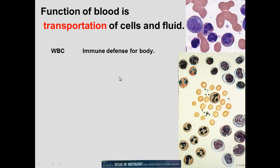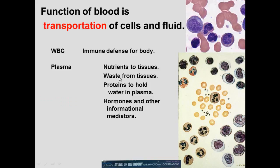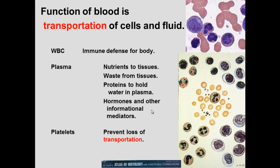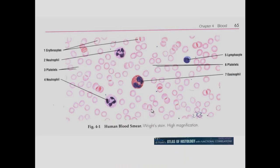White blood cells provide immune system defense. The plasma itself provides nutrients to tissues and carries waste from tissues. It contains proteins like albumin that hold water in the plasma, as well as hormones and inflammation molecules. Platelets function to prevent loss of blood fluid and maintain transport of nutrients and waste, including oxygen and carbon dioxide exchange.